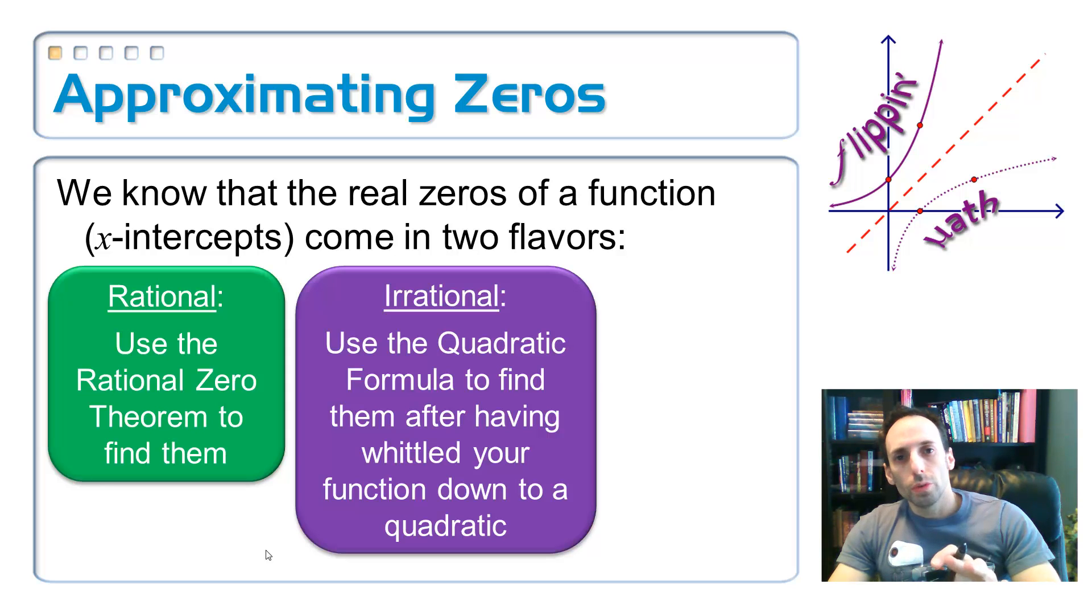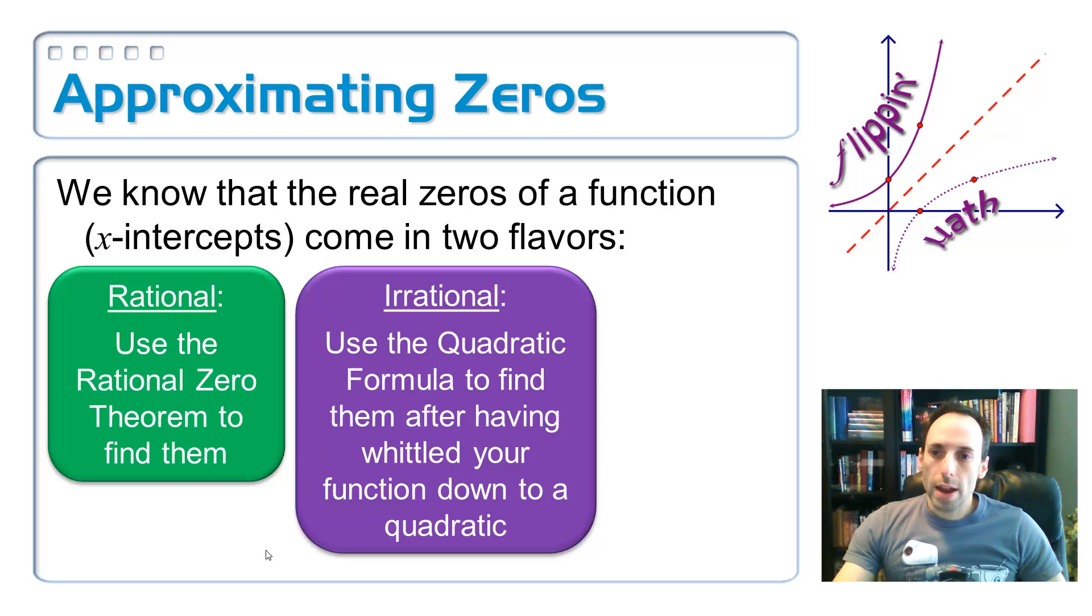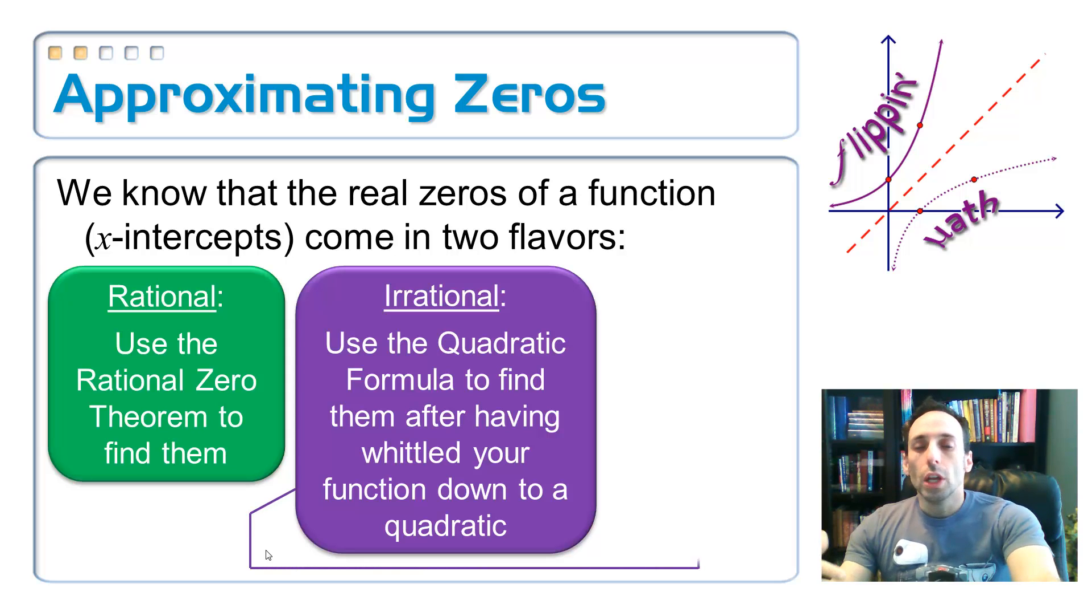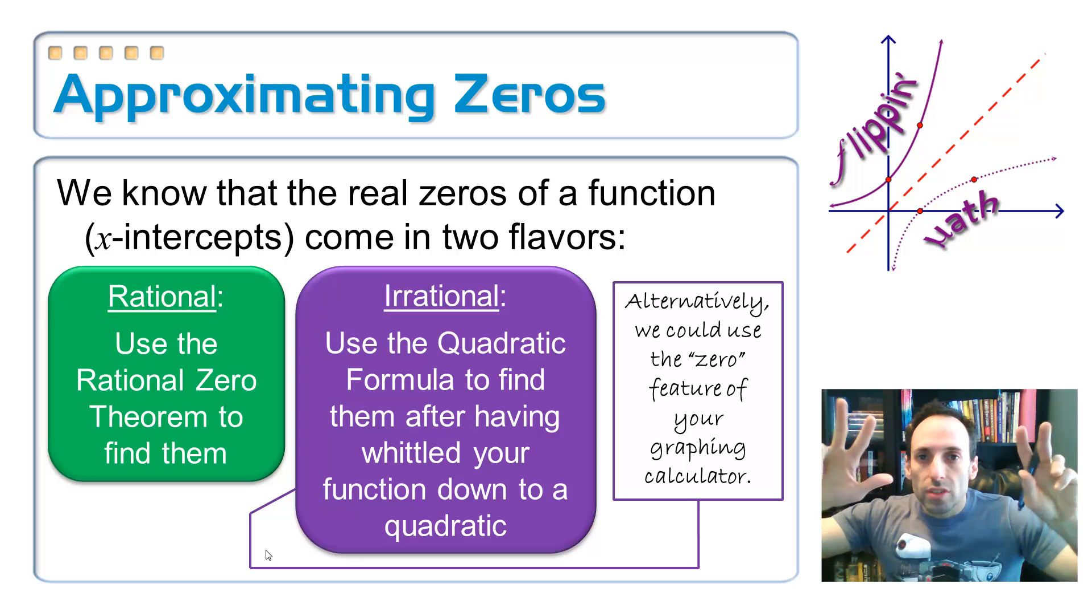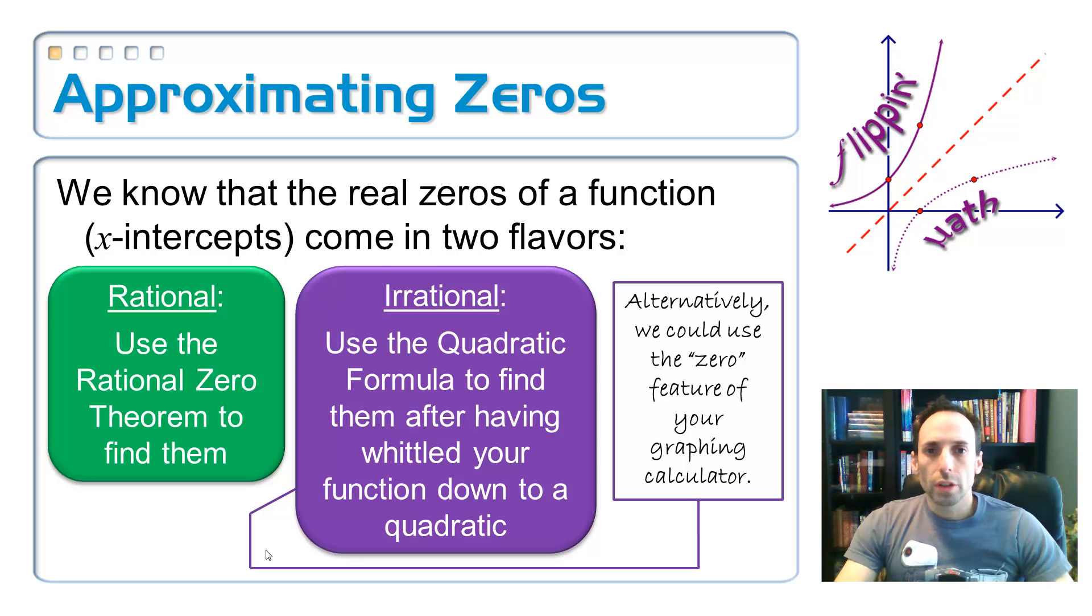we're going to use probably the rational zero theorem to find those. Okay, so, zeros, real zeros, are x-intercepts, and they come in two flavors. The first kind are rational ones. And in order to get them, we use the rational zero theorem, and we test them out with synthetic division. If they're irrational, we have to break it down to a quadratic and then use the quadratic formula. And that's what I did in the last example. Okay, and this last one, the irrational ones, alternatively, we can use our graphing calculator and then use the zero feature of that graphing calculator in order to find those approximate values. And that's what we're about to do.